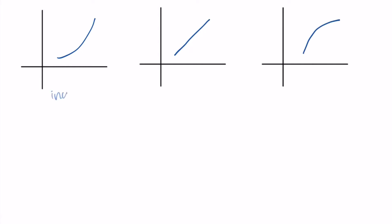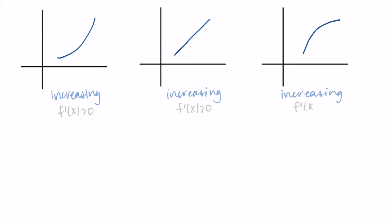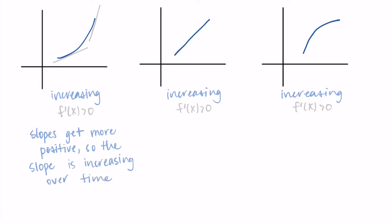All three graphs will have a positive first derivative because they're increasing — the slopes are always positive. On this first graph, I'm drawing some tangent lines and noticing that the slopes get more positive over time. We start with a positive slope that's sort of flat, and then it becomes steeper. So maybe the first slope is one half, then as we move right, slopes become five, ten, a hundred — they're increasing. Since the slope is really the derivative, the derivative is increasing over time. And since the second derivative is the rate of change of the first derivative, the second derivative is positive.